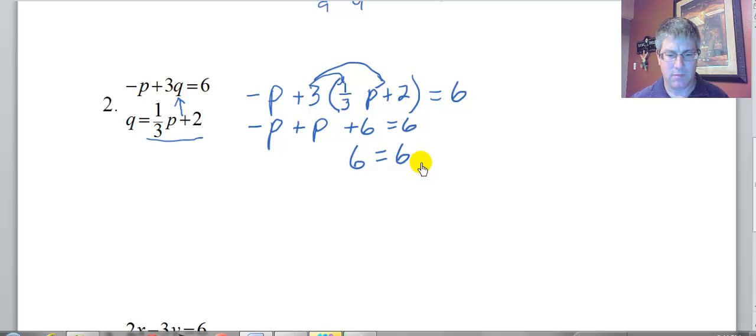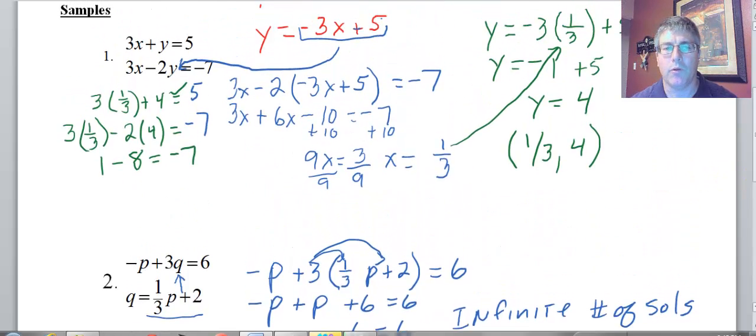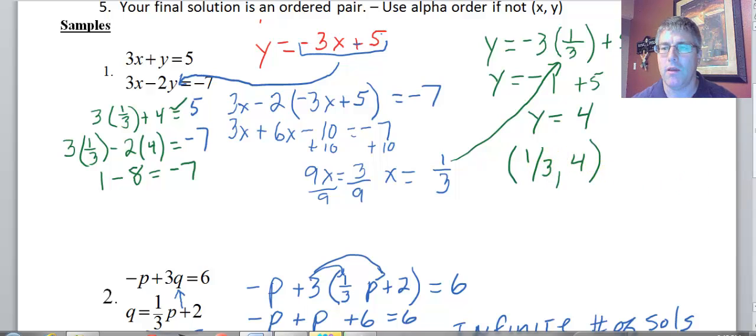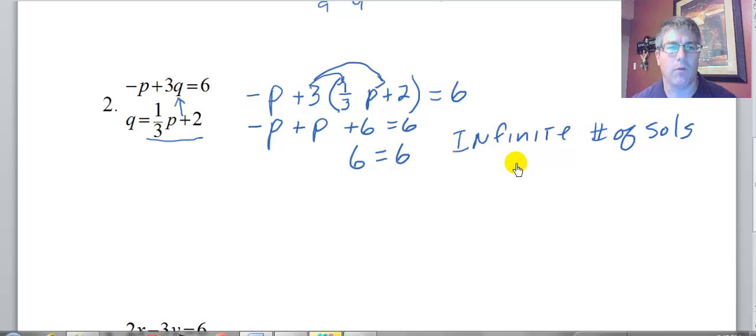When does that happen? That happens all the time. So now what happens here? Well, this must mean I have an infinite number of solutions. And this is a little different than all real numbers. This doesn't mean every ordered pair is going to work, but it does mean there are an infinite number of ordered pairs that do work. In our previous problem, there was only one ordered pair that worked.